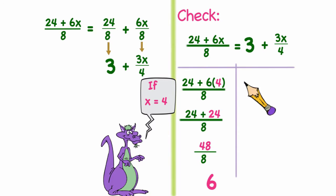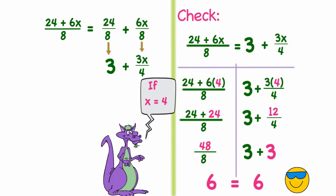When I plug it into 3 plus 3x over 4 I get 3 plus 3 times 4 or 12 divided by 4 which is 3, so I get 3 plus 3 or 6. Since both those two expressions give me the same answer I know the original expressions were equivalent.